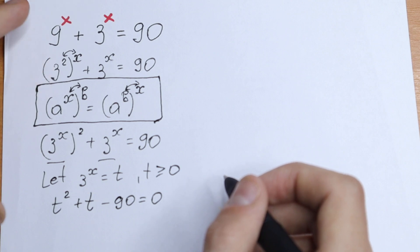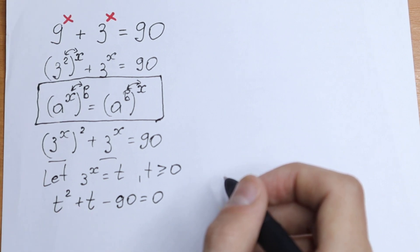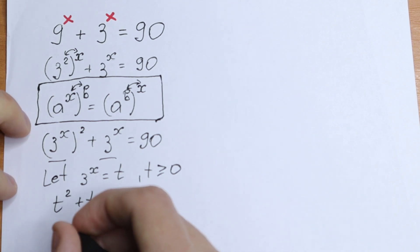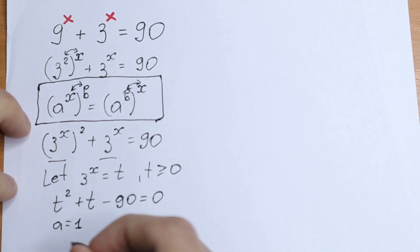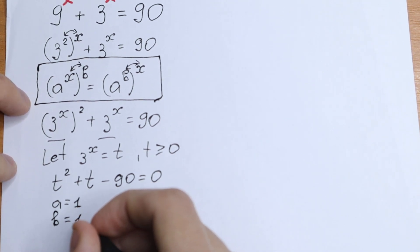We have a really good quadratic equation so we can easily solve it. But not with the x, with the exponent, with power. Just classic quadratic equation. So we can write our ABC. So a equal to 1 from here. B equal to 1 as well. And c equal to minus 90.